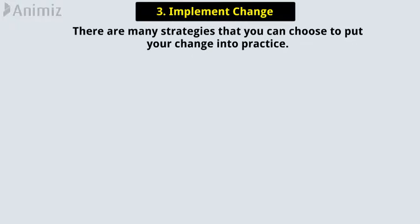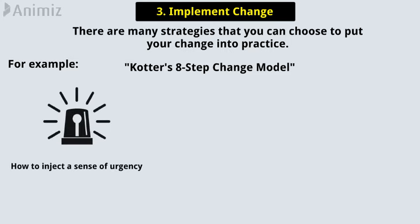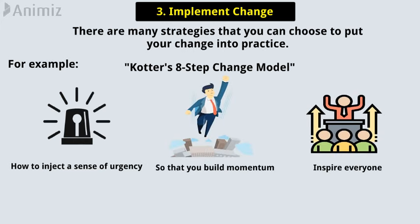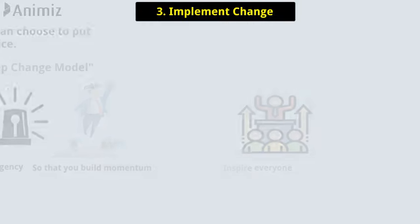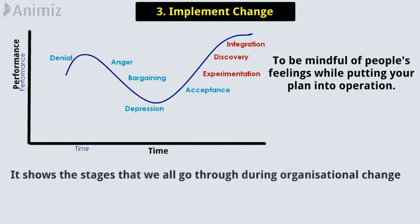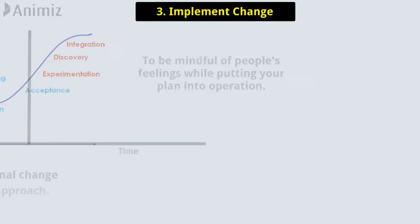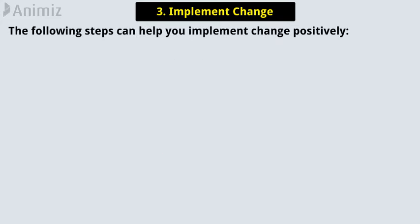The third principle is to implement change. There are many strategies that you can choose to put your change into practice. For example, Kotter's 8-step change model explains how to inject a sense of urgency into your actions so that you build momentum and inspire everyone to get behind your changes. Meanwhile, the change curve encourages you to be mindful of people's feelings while putting your plan into operation. It shows the stages that we all go through during organizational change, from shock and denial to fully investing in the fresh approach.